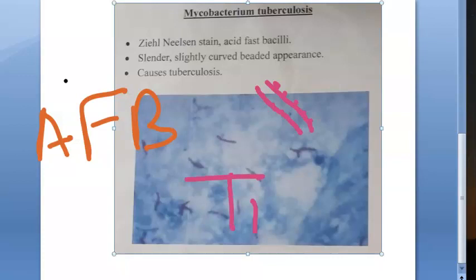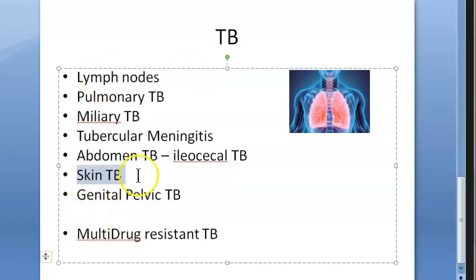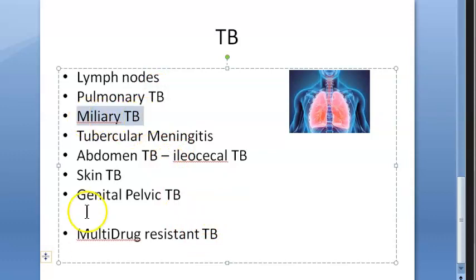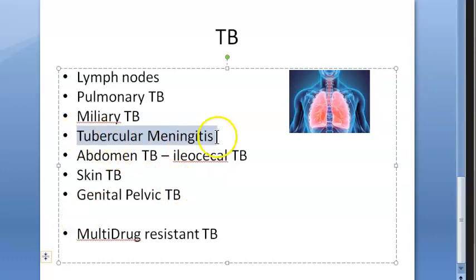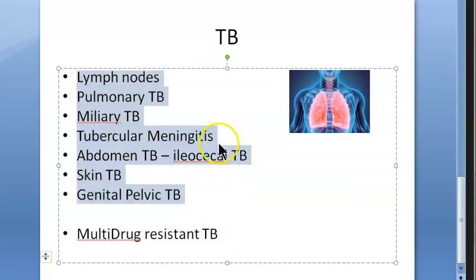These slender, slightly curved, beaded acid-fast bacilli cause tuberculosis — the causative organism is Mycobacterium tuberculosis. This bacteria can affect every part of your body: skin, lymph nodes, lungs (pulmonary tuberculosis), brain coverings (tubercular meningitis), abdomen (ileocecal tuberculosis), and the genital-pelvic region.